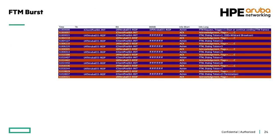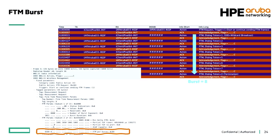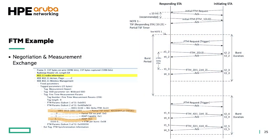Then you get the burst of information — a burst of eight, which is default on Android but configurable — giving you roughly seven measurements inside that burst. You can see the first burst and where to find the burst information field set to eight. The negotiation and measurement exchange includes the partial TSF timer, which can be used by the initiating station to sync on timing and verify that the responder's timing is synchronized.